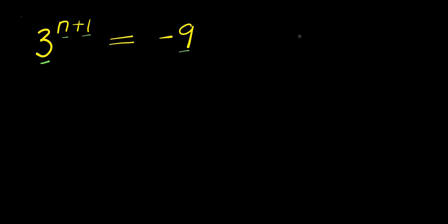If you have a to the power of x plus y, this equals a to the power of x times a to the power of y.